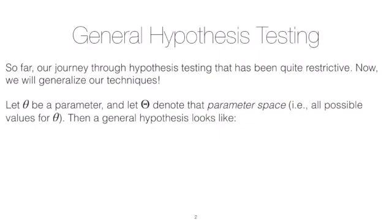So we might generalize by thinking about not just a mean or a proportion, but a general parameter theta. And if we think about capital theta as being the parameter space, then we can test, we can state our hypotheses a bit more generally. So we might say something like our null hypothesis is that theta is in some set, say, capital theta naught, where capital theta naught is a subset of the entire parameter space.